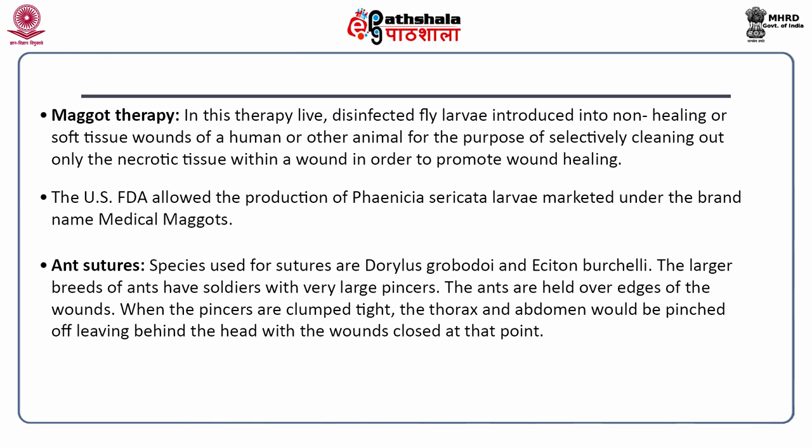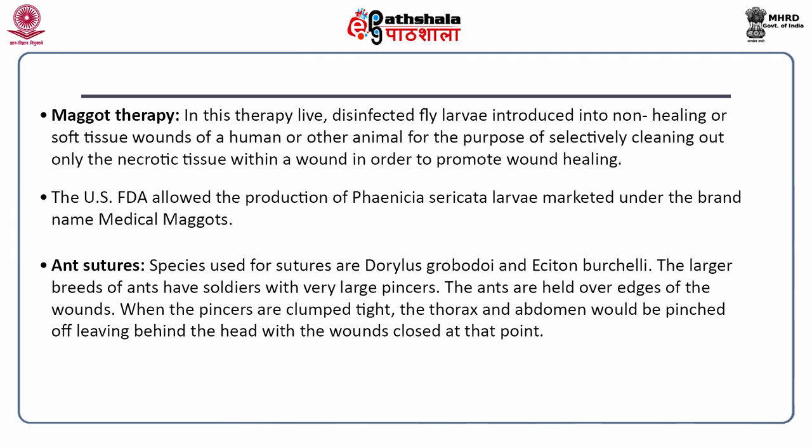Ant sutures are another practice; species used include Dorylus, Labidus and Eciton burchellii. The larger breeds of ants have soldiers with very large pincers. The ants are held over the edges of wounds; when the pincers clamp tight, the thorax and abdomen are pinched off, leaving behind the head with the wound closed. These ants secrete a substance known as cantharidin, a powerful protein blocker in the human body preventing viral infection and reproduction.